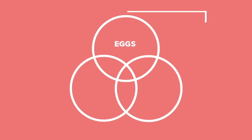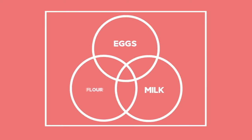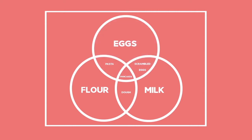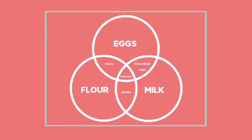A Venn diagram groups different sets of items and is used to show how items are related to each other. The area inside the circular shape shows the outcomes included in an event, and the area outside the circle represents the outcomes not in the event. The rectangle drawn around the circles shows all the outcomes contained in the sample space.